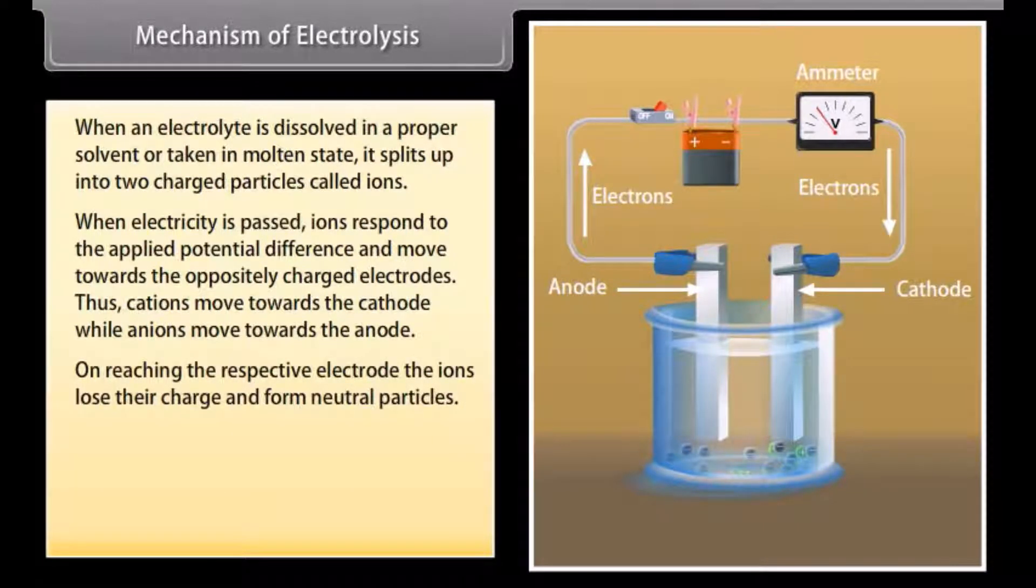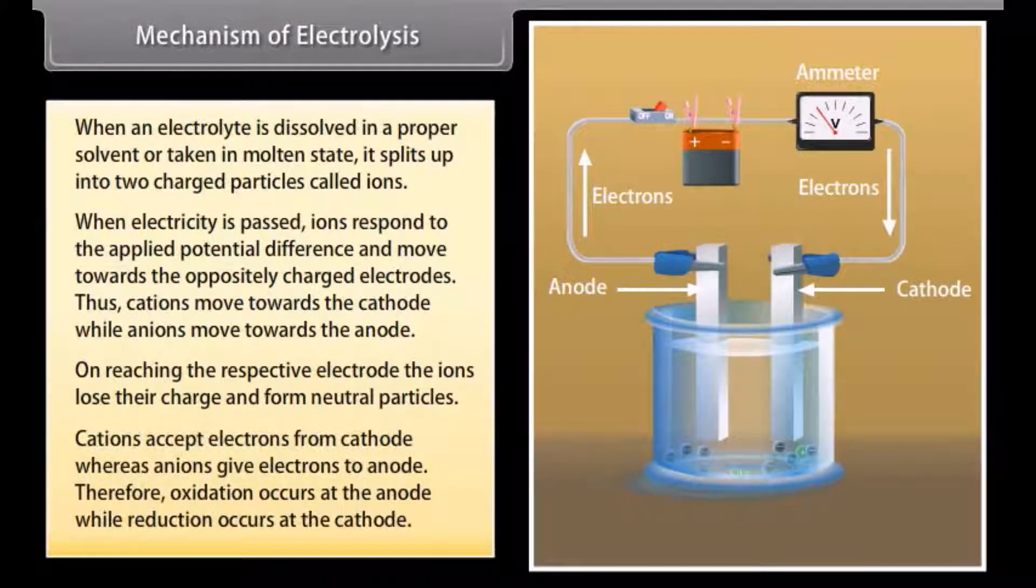On reaching the respective electrode, the ions lose their charge and form neutral particles. Cations accept electrons from cathode, whereas anions give electrons to anode. Therefore, oxidation occurs at the anode while reduction occurs at cathode.